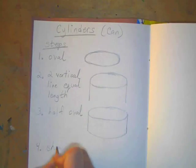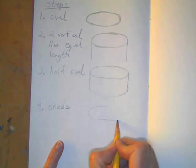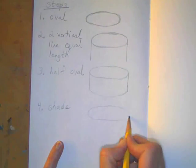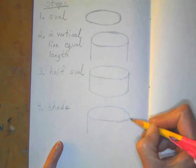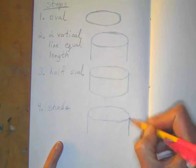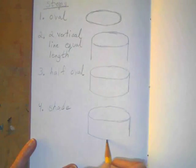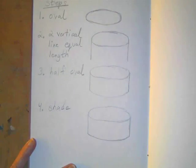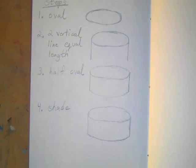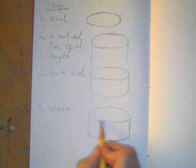And then step number four is to shade. So we're going to draw our oval again. Vertical line, vertical line, vertical line. Bottom half of our oval. So it curves down. The cylinder isn't flat on the bottom. It has a little curve to that side. So I'm going to make it curved.